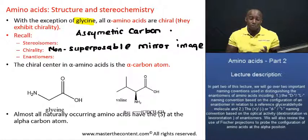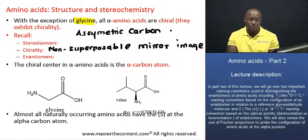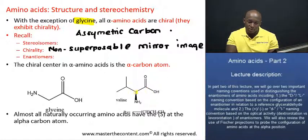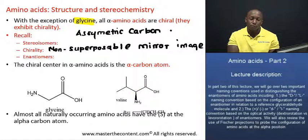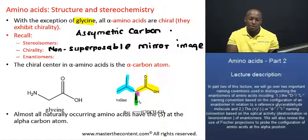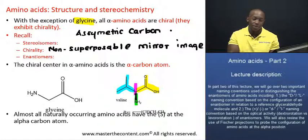An asymmetric carbon is basically a carbon that is bonded to four different groups, and that's what we refer to as a chiral center or a stereogenic center. To illustrate this point, I'll direct your attention to the two amino acids at the bottom of the screen. Our chiral center would be this carbon right here, and as you can see, it is bonded to four different groups: one, two, three groups shown, and the fourth is a hydrogen atom attached to that carbon.